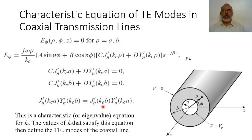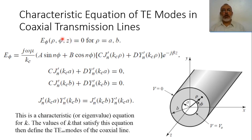We solve this equation for the given values of a and b to determine the cutoff wavenumber kc. From kc we obtain the propagation constant beta, and from beta and kc we can find all other field components. The values of kc that satisfy this equation define the TE_nm modes, where n is the order of the Bessel function — the order of variation in the phi direction — and m is the root index.